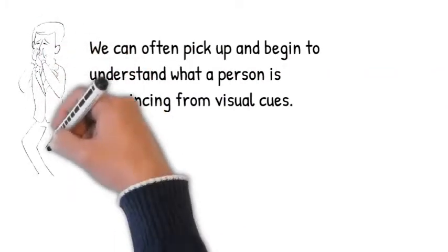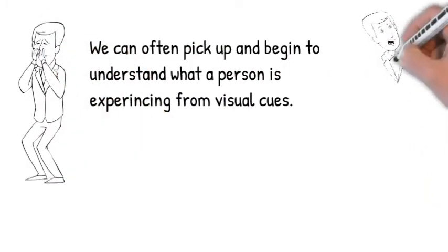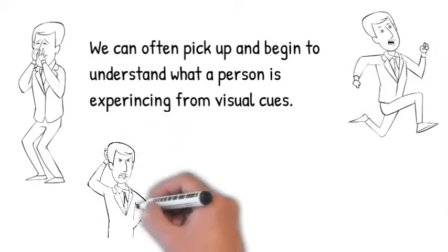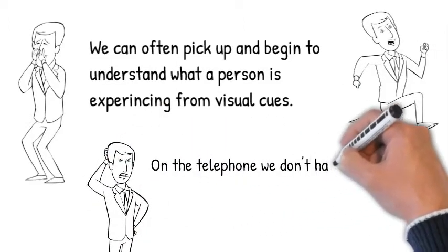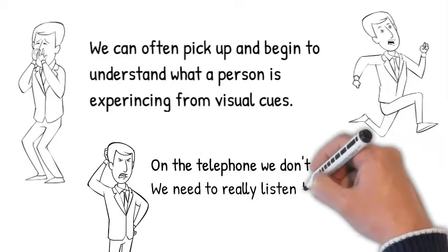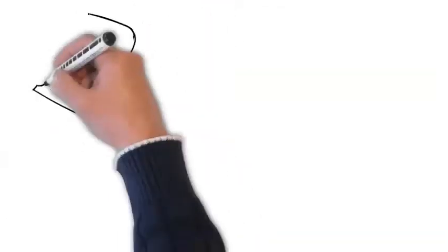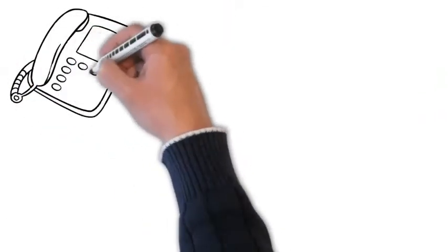We sometimes pick up on that person's experience through visual cues that we see - are they suddenly avoiding or running away from the situation? Are they angry? We don't have those visual cues on the telephone, so we need to listen to what's being said and how it's being said.